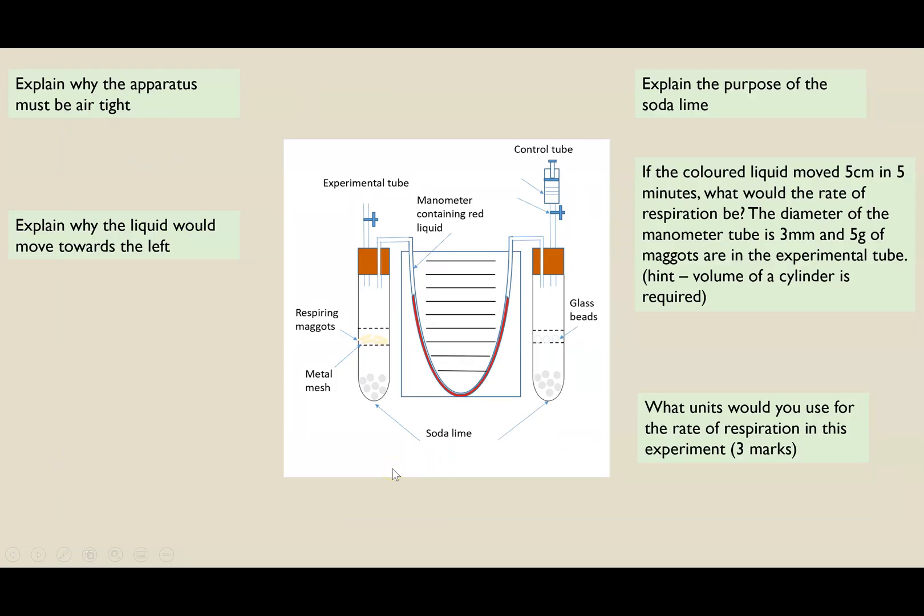So we're going to have a go then at some questions. At this stage you might want to pause, get your pen out and your paper and have a go at these exam style questions. Just to give you an overview of how I've split up the types of questions. The top two are linked to the apparatus setup. So why does it have to be airtight? What is the purpose of the soda lime? Then we've got application of your knowledge. So explain why the liquid moves to the left and try and include as many key terms as possible. Then we've got our maths over on this side. So can you remember what the units would be? Three marks as a reminder, there's always three components to those units. And then actually calculating the rate of reaction. And again, you have to include the units in your answer. So pause the video, have a go at these. It should take you about five to ten minutes to answer these questions.